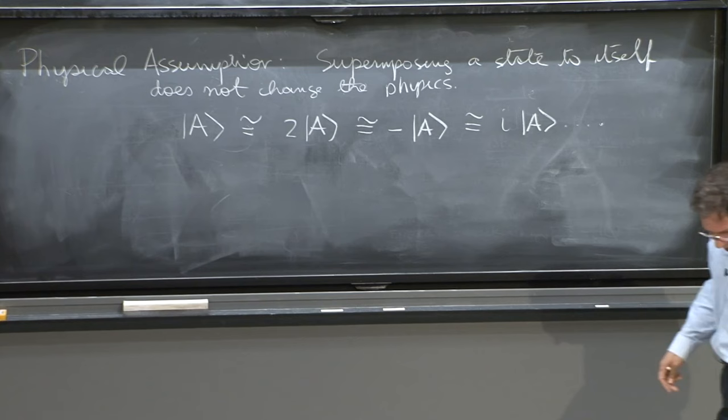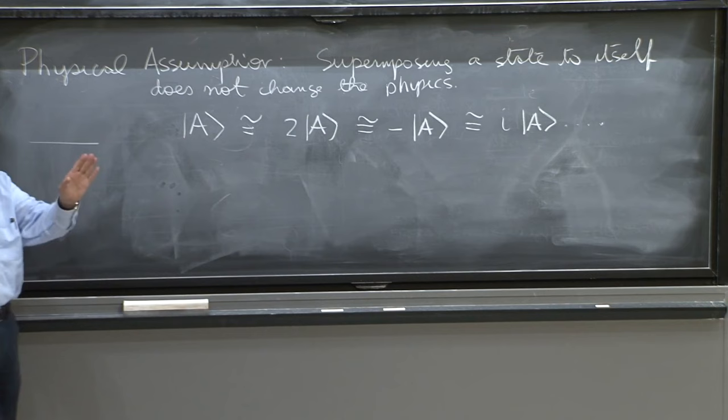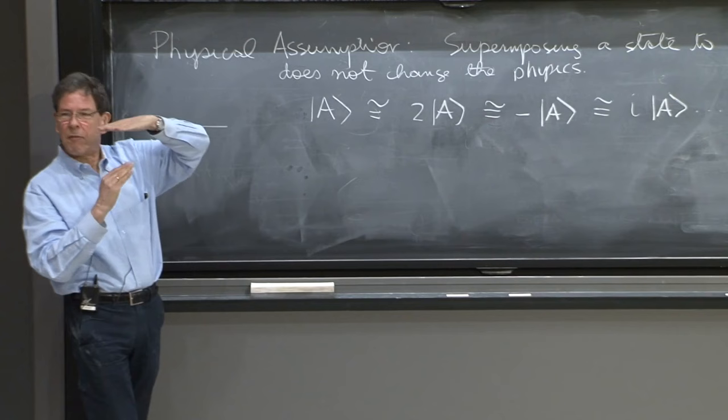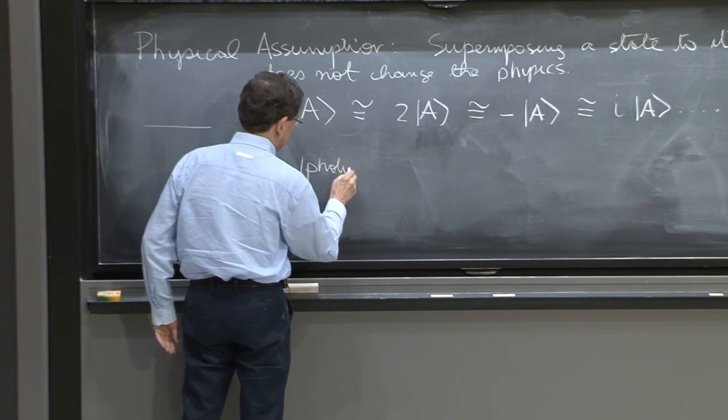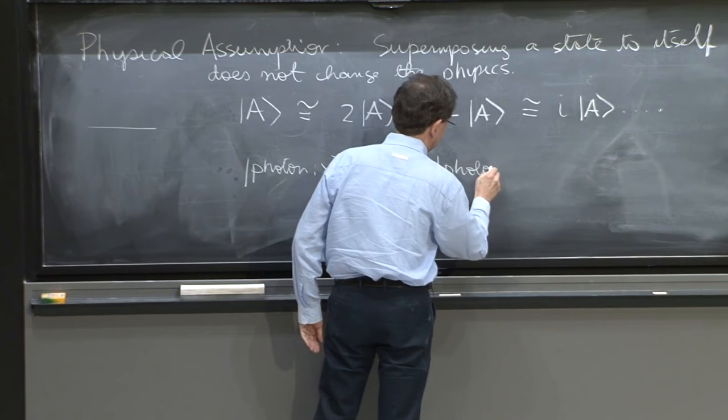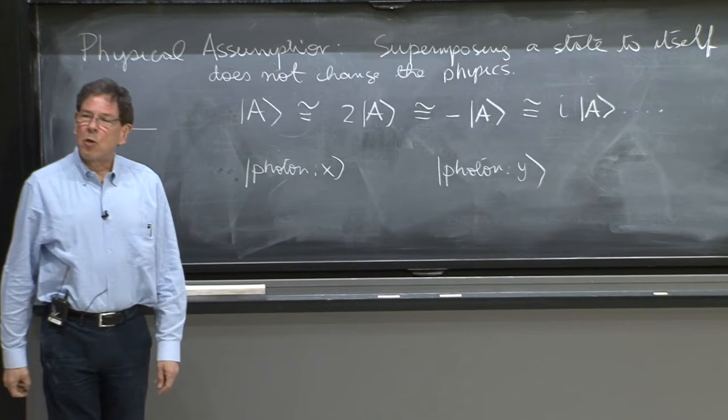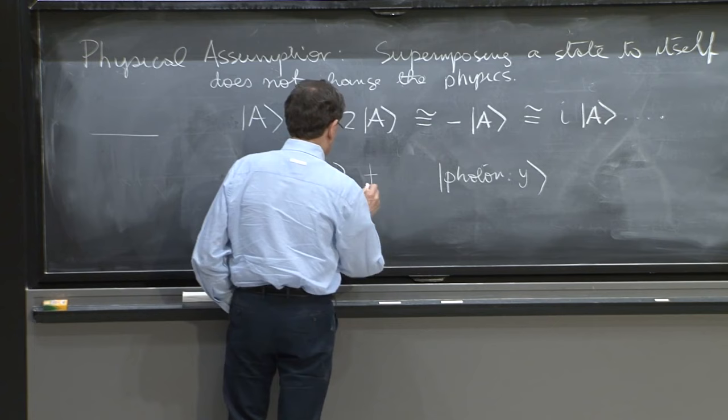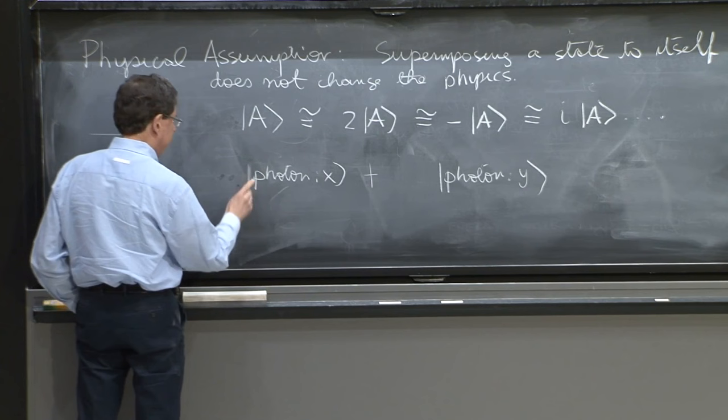So remember, we spoke about photons hitting a polarizer. And we could speak of two independent kinds of photons: photons polarized along the x-axis and a photon polarized along the y-axis. And those are two quantum mechanical states.